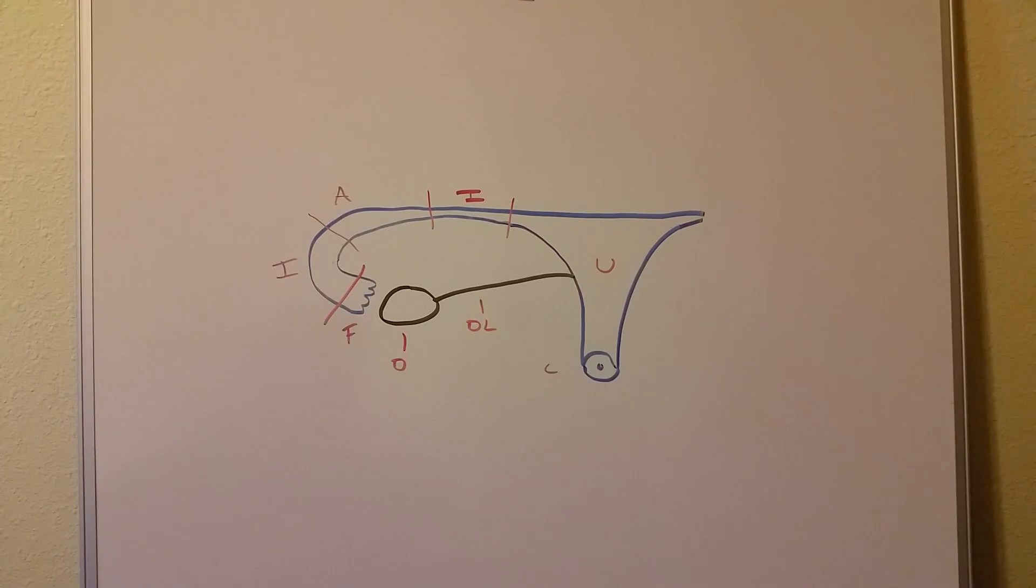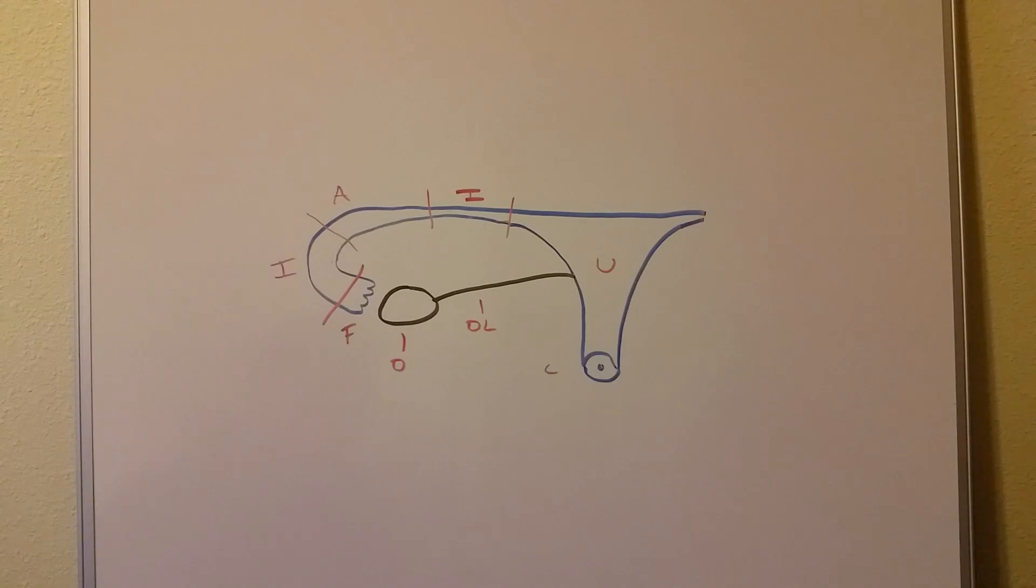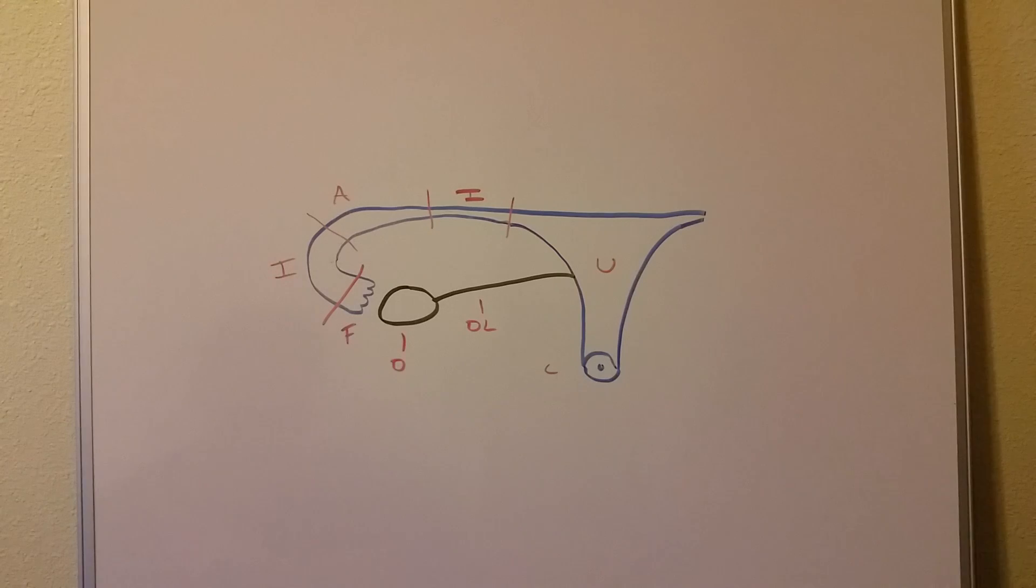Now the isthmus is the narrowest portion. You might know what an isthmus is, like in landforms, but it's a narrow landform connecting two larger landforms. So it is very narrow. And that is why people usually think that the isthmus is the site of ectopic pregnancy. However, that's incorrect. The most common site of ectopic pregnancy is the ampulla, which is not the narrowest, but it's the site where fertilization occurs.